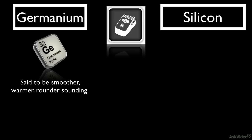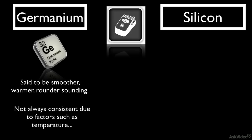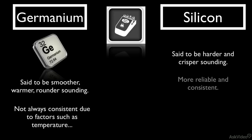The problem with germanium transistors, though, is that they were often unreliable, and really fluctuated due to external factors such as weather and temperature. They're also noisier. The more reliable silicon transistors are said to be harder and crisper sounding. However, both germanium and silicon are used widely in pedals, and they really just offer different flavors.